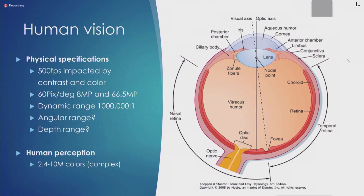Some physical specifications: we can detect up to 500 frames per second, which is impacted by contrast and color. Take these numbers with a grain of salt — if I tell this to vision scientists, they'll say these numbers vary between different ages, different races, and even if you're drinking alcohol or coffee. What I'm giving you today are average numbers for an average population, some rough numbers you can use in your design and your perception of AR and human perception limits.